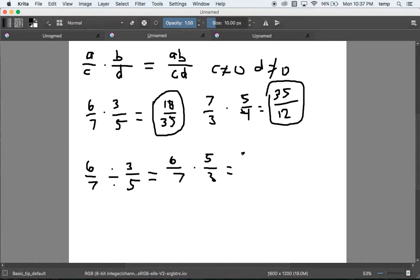It's just the same as we were doing above. 6 times 5 is 30, 7 times 3 is 21. We could simplify this one a little bit, right? We could take a 3 out of both. If we took a 3 out of 30, that would leave us with 10. If we took a 3 out of 21, that would leave us with 7. And so 10/7 would be our final answer.